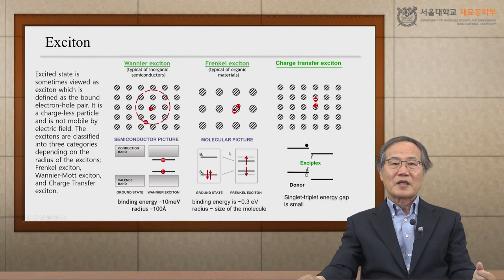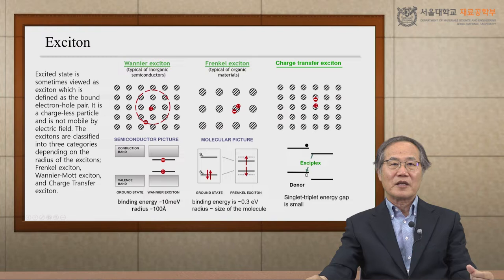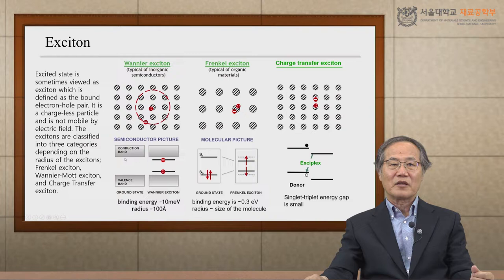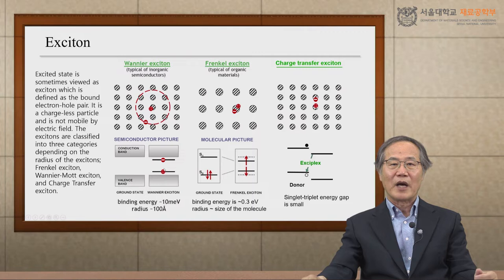This excited state is sometimes viewed as an exciton. That is a particle picture of excited state, defined as the bound electron-hole pair, which is schematically shown in these diagrams. This is the valence band and the conduction band in inorganic semiconductors. The bound electron-hole pair has a smaller energy difference between free electrons and free holes because of the binding energies. The energy difference corresponds to the binding energy.